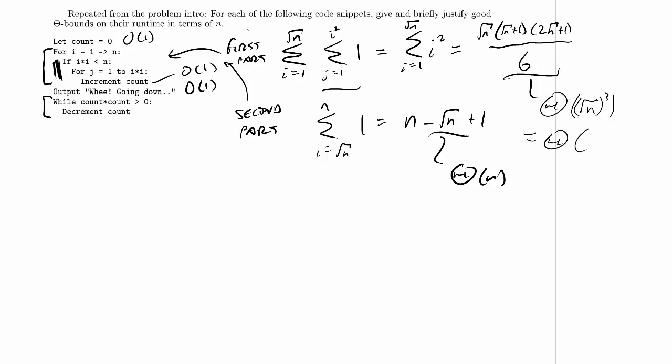Well, remember, the square root of n is just n to the 1 half, so this is n to the 3 halves. And n to the 3 halves dominates n to the 1.